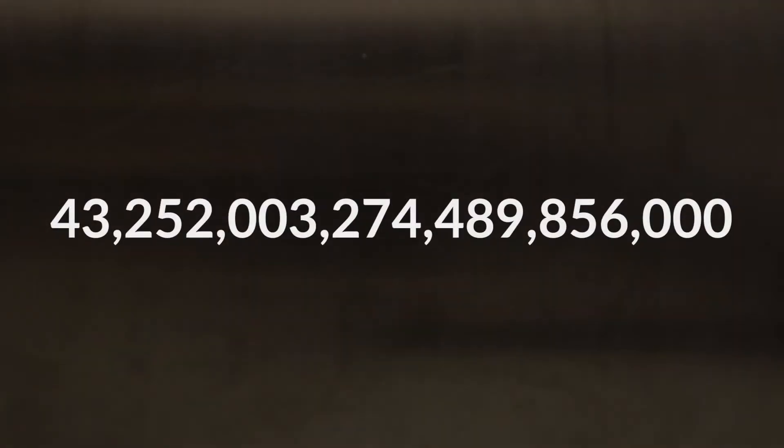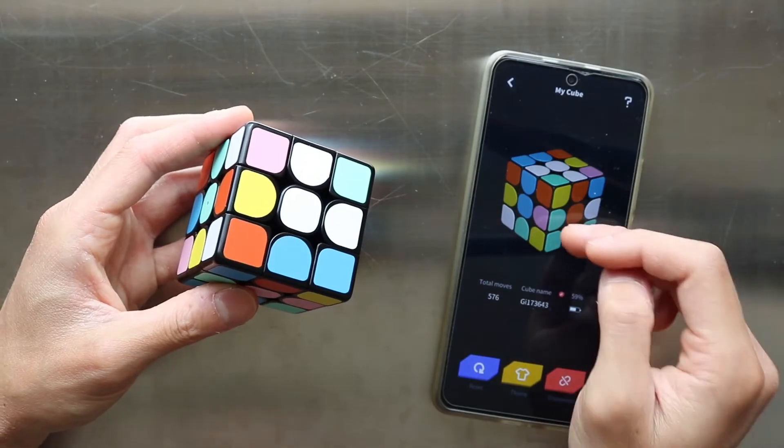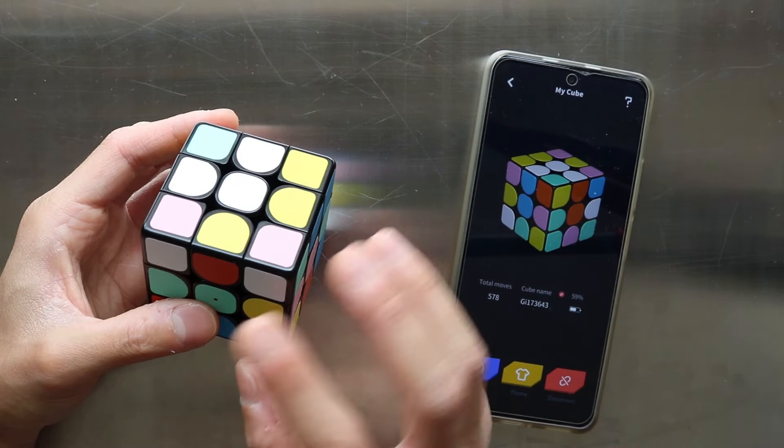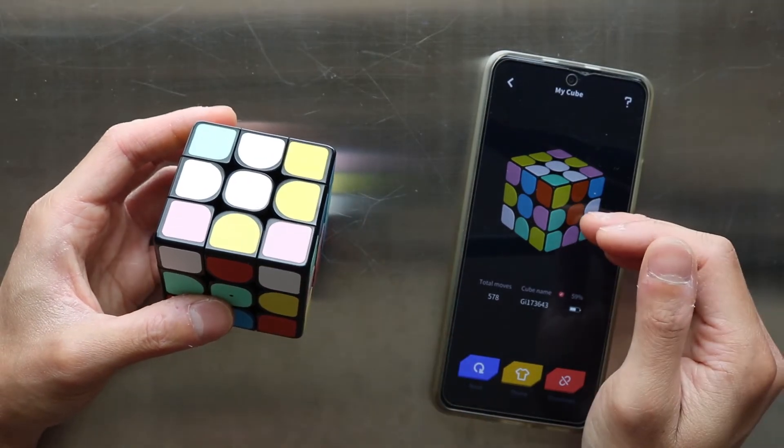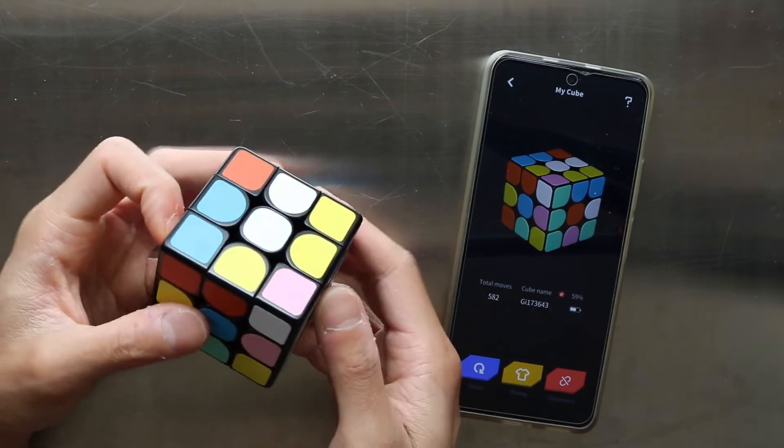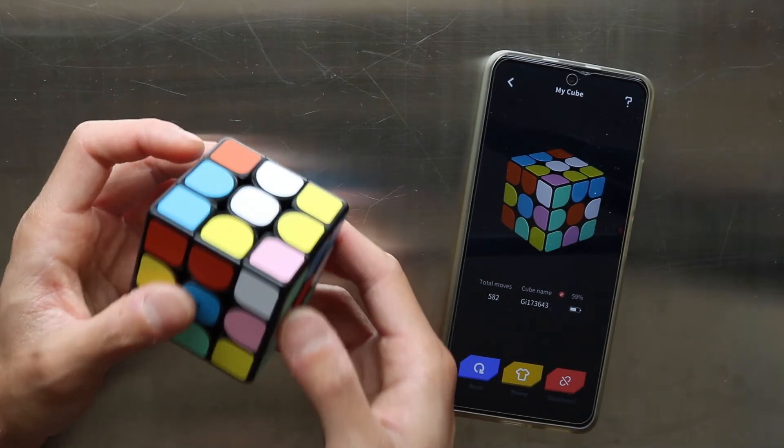In fact, there are over 43 quintillion combinations. What the app shows you is only a calculated state of the cube. The electronics inside provides the information to the app which is which face is rotated as well as the order of the rotations. And when the electronics fails to provide that information accurately,